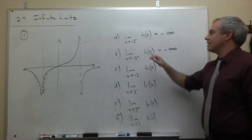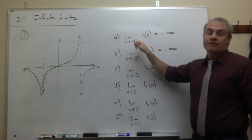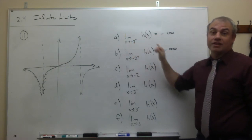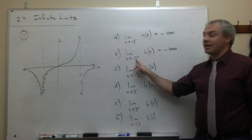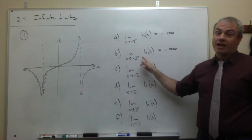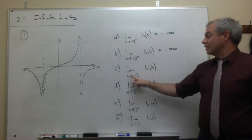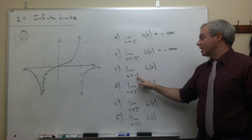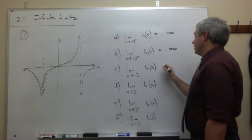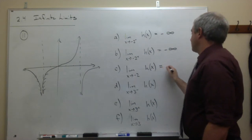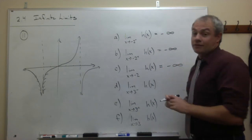Since the limit as x goes to negative 2 from the left is the same as the limit as x goes to negative 2 from the right, we can say that the limit as x goes to negative 2 of h of x is, in fact, negative infinity.